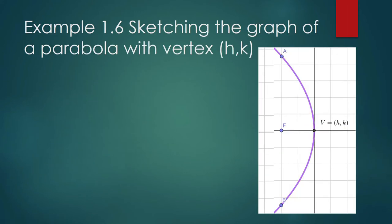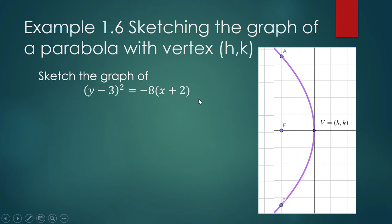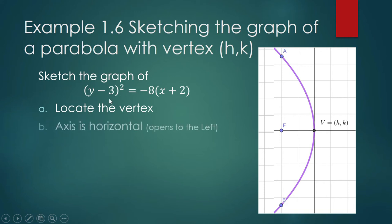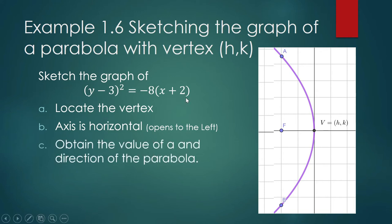A parabola opens downward when a is less than 0. Now let us sketch the graph of a parabola with vertex h, k. The direction of our work: locate the vertex, then go from the vertex to the focus, from the focus to the endpoints of the latus rectum, and then trace the curve through those endpoints and through the vertex. For our example, h is −2 and k is 3.